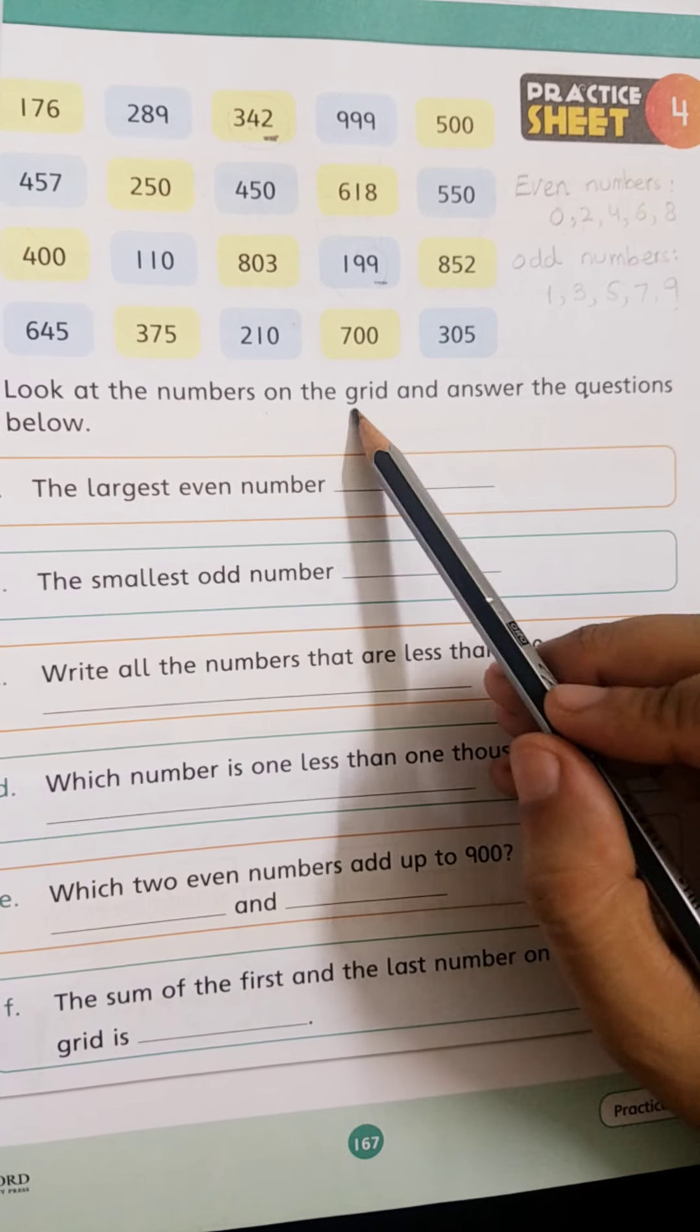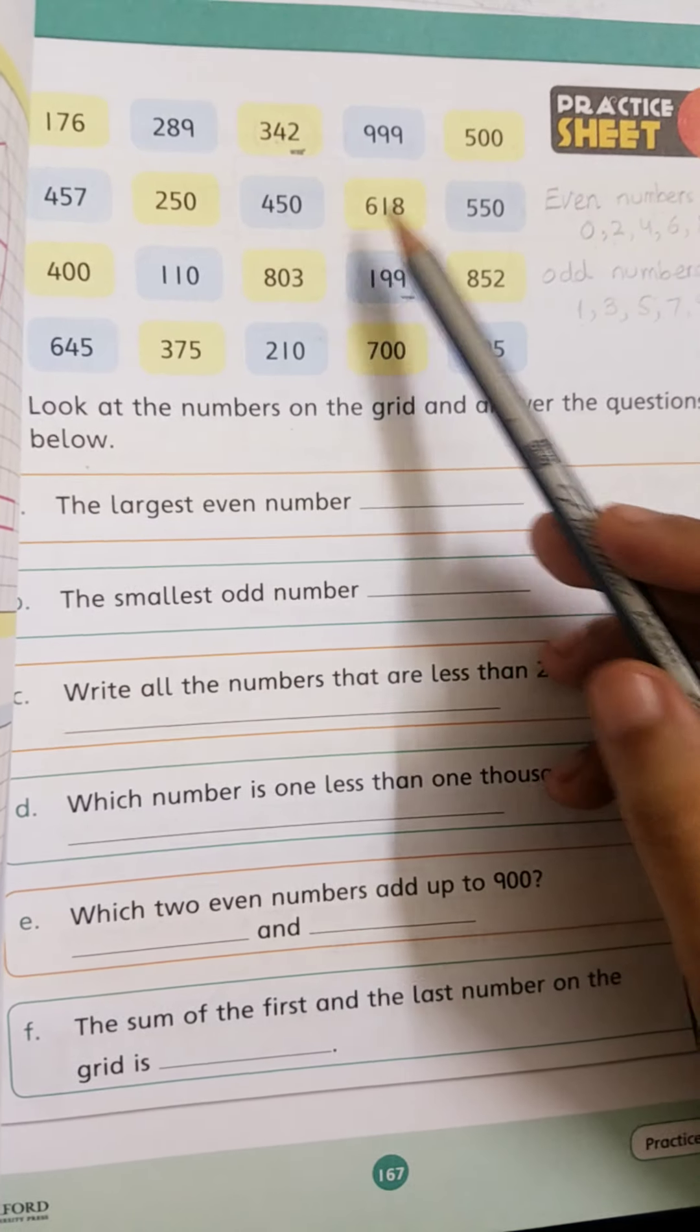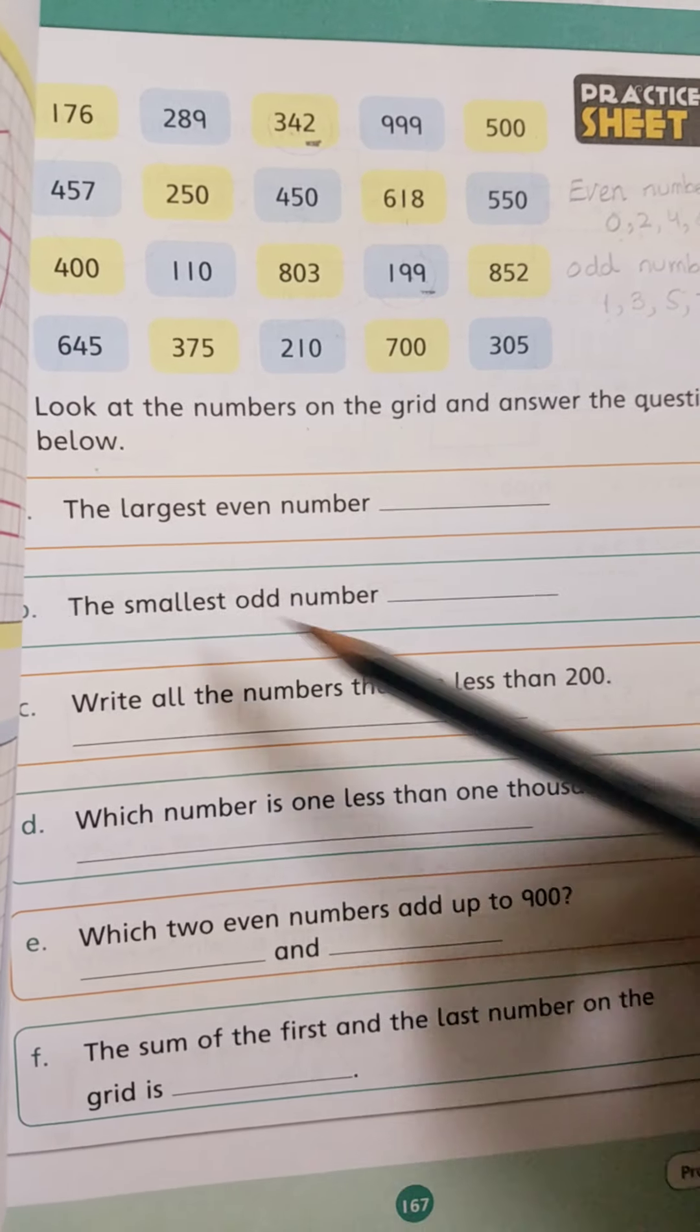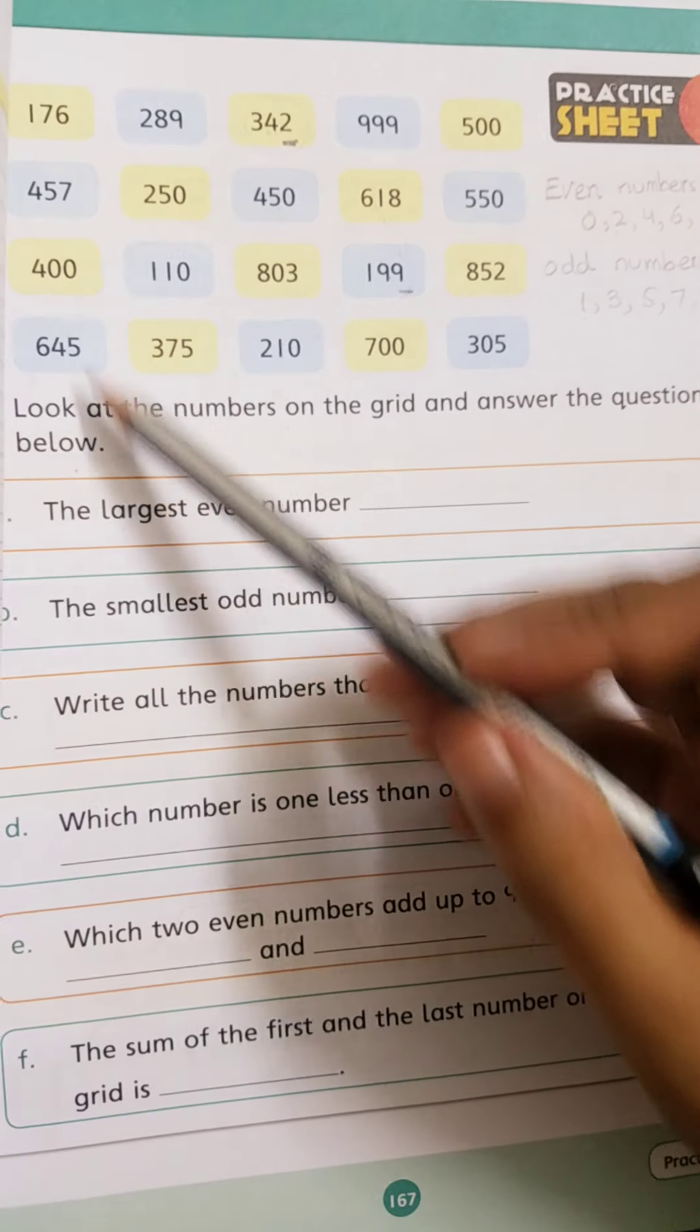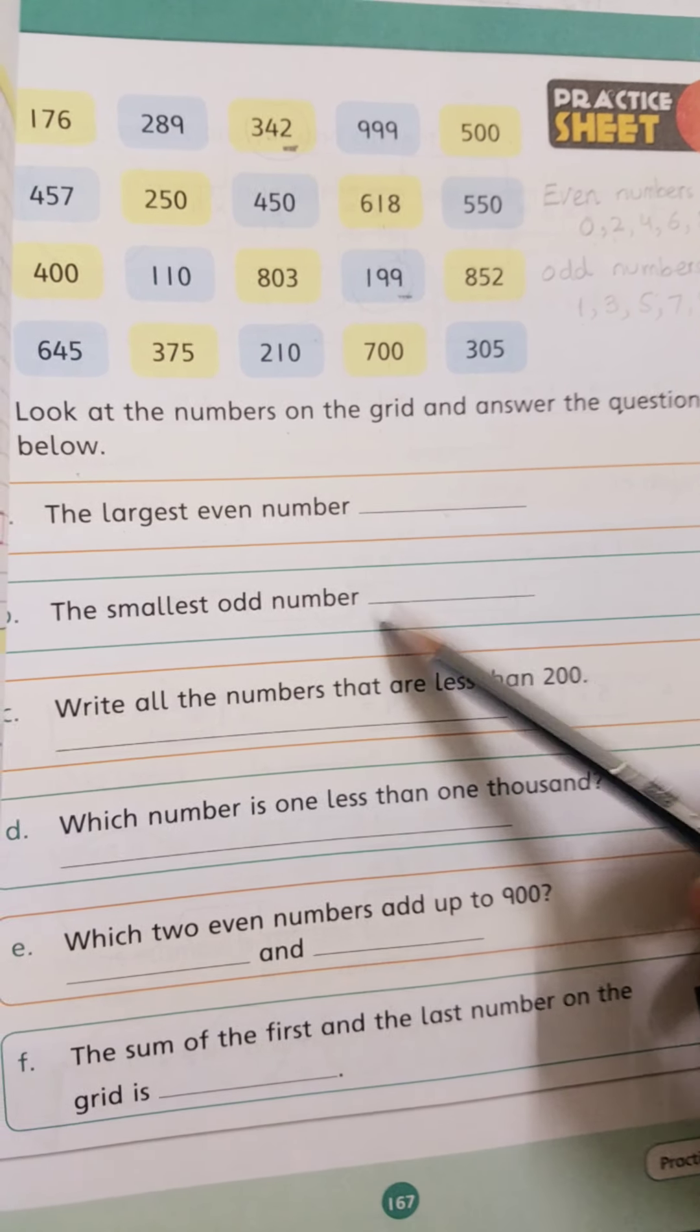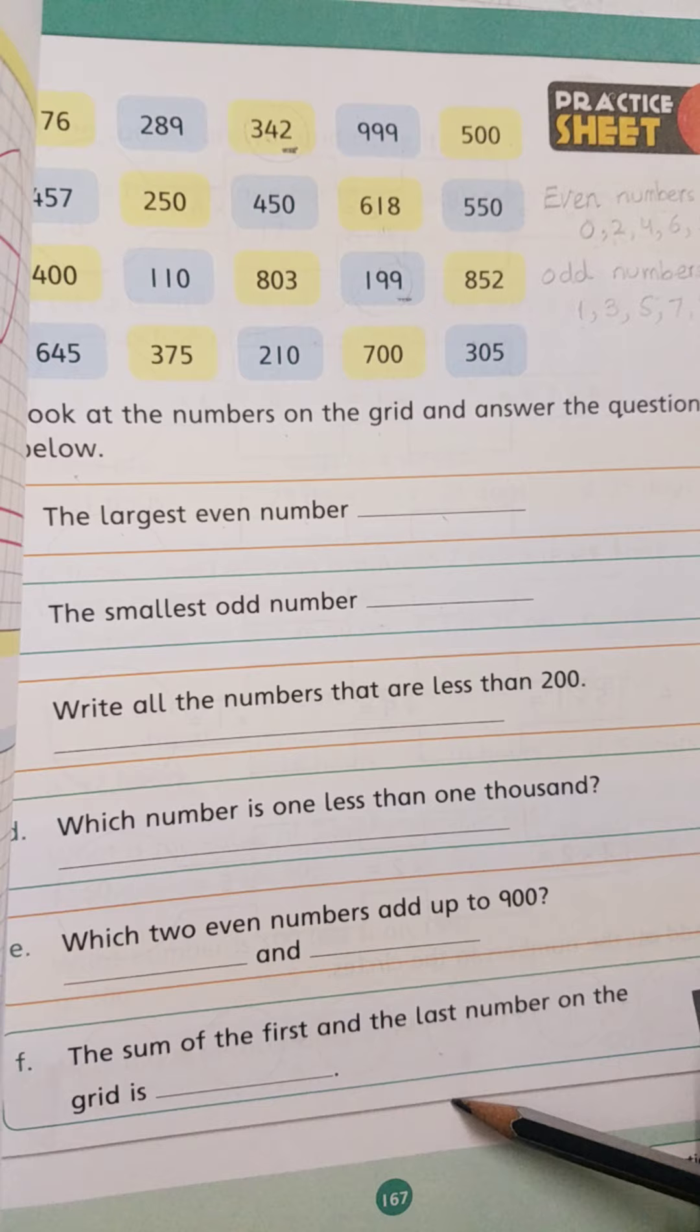Look at the numbers on the grid and answer the questions below. The largest even number, the smallest odd number, write all these. Do all questions in your book. Allah Hafiz.